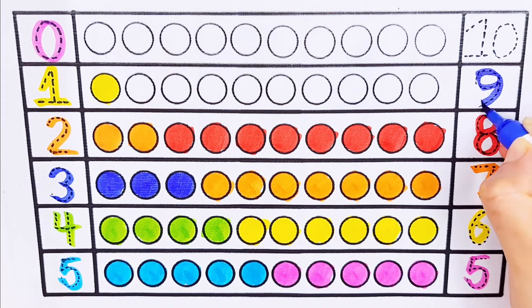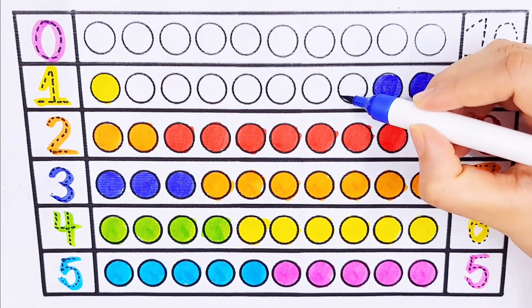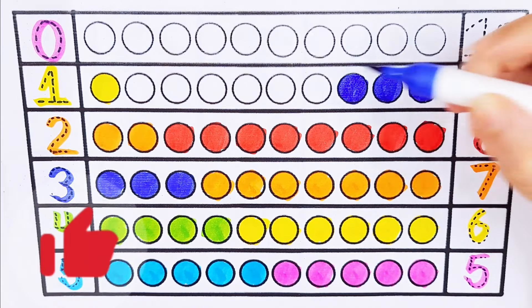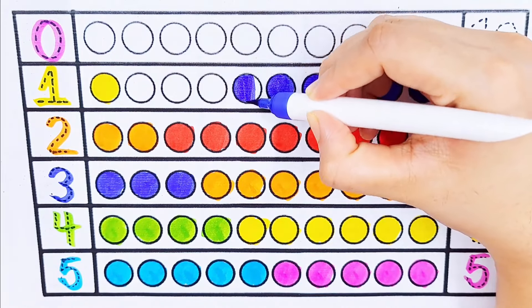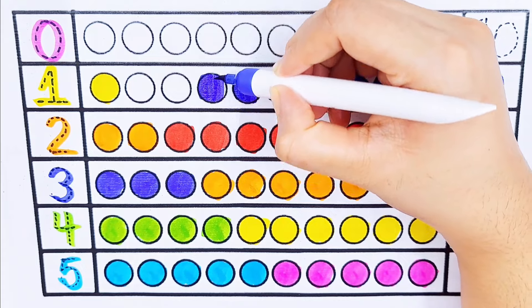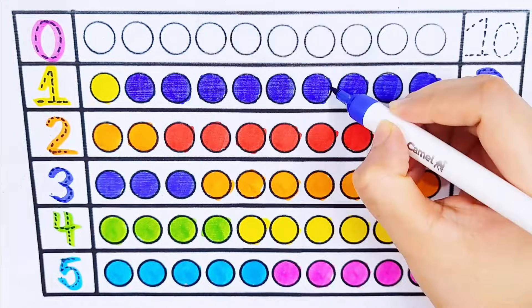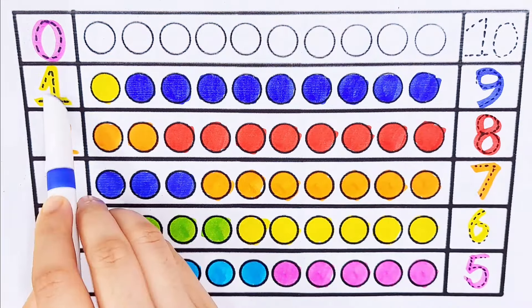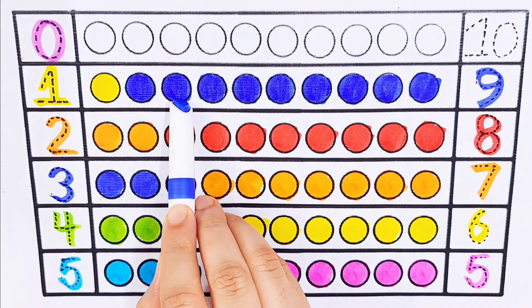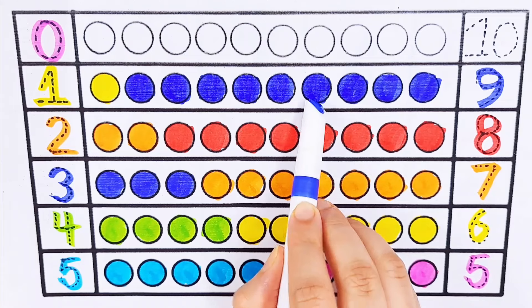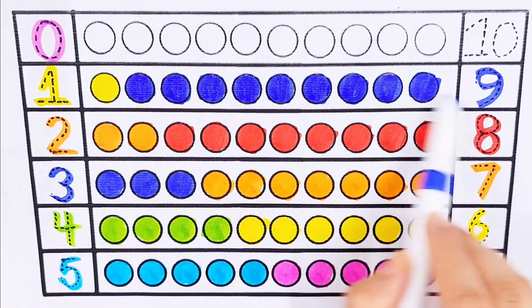Number 9: 1 plus 9 equals 10. 1, 2, 3, 4, 5, 6, 7, 8, 9, 10. 1 plus 9 equals 10.